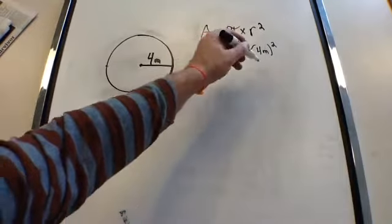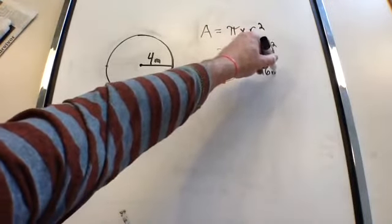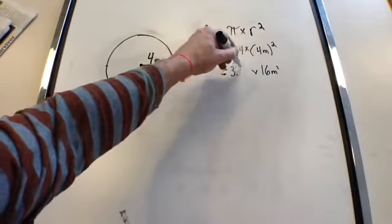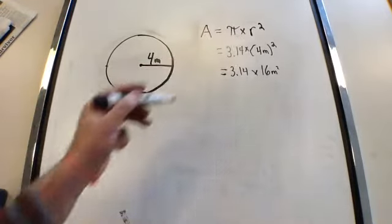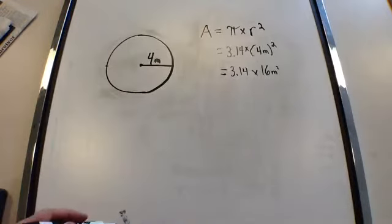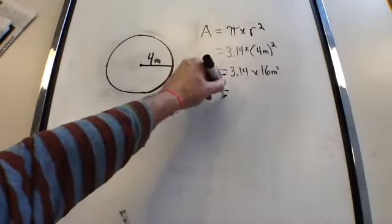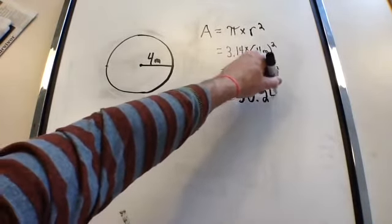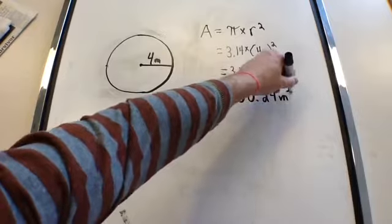When we square our 4 meters, we're going to get 16 meters squared times 3.14. When we multiply our pi by our 16 meters squared, we will get an answer of 50 and 24 hundredths meters squared.